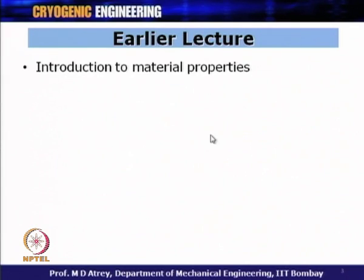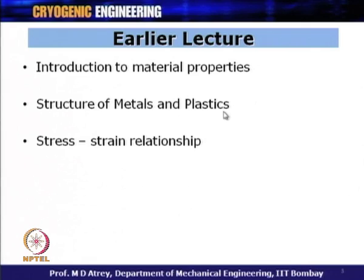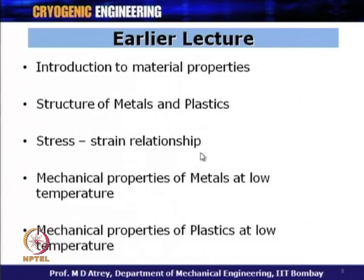The earlier lecture introduced different material properties. We talked about structures of metals and plastics — BCC, HCC, FCC, etc. — and their relevance to mechanical properties. We also talked about the stress-strength relationship, which is very important for understanding mechanical behavior at any temperature, and touched upon mechanical properties of plastics at low temperature, since plastics also play an important role in cryogenics.